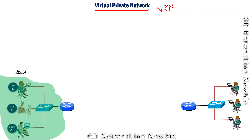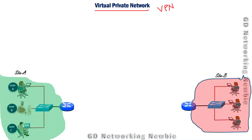If users on site A want to send private information to site B, they need to establish their own dedicated link, which we call a leased line. That leased line is basically a dedicated line between site A and site B, and by using it — which is owned by those two organizations — they can send their information privately.